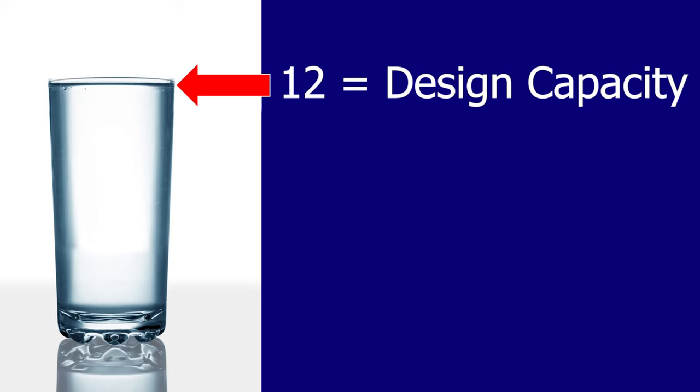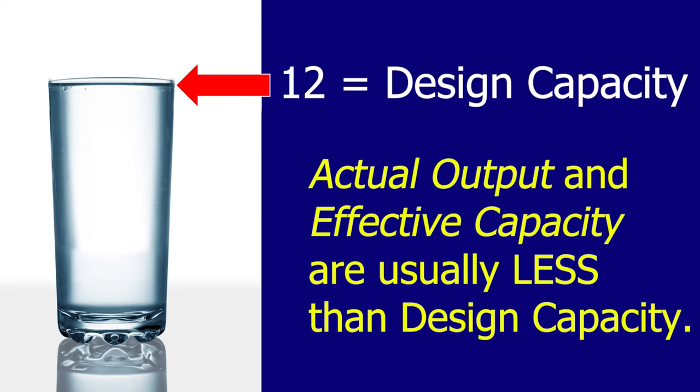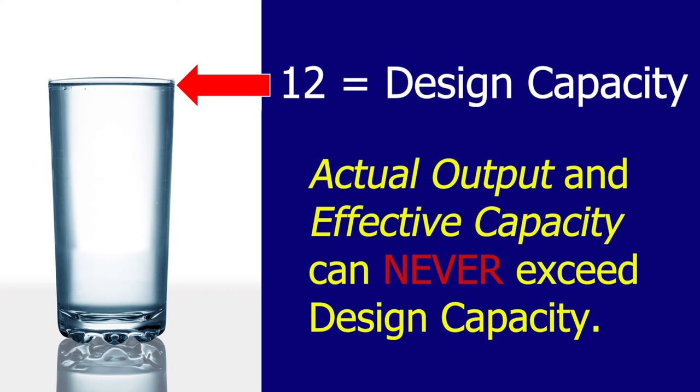So why fill it to the design capacity if it's going to cause a problem? My effective capacity — nine or ten ounces — is my sweet spot. It's that place where I'm confident I can utilize my design capacity without causing any problems. Designed to do 12 ounces, my actual output and my effective capacity can both be less than that. One key rule: effective capacity can never exceed design capacity. This glass is designed to hold 12 ounces, so you cannot produce beyond the capacity you have.